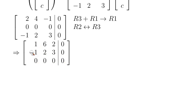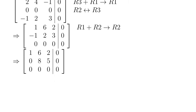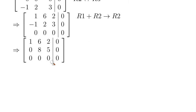I want to turn the negative 1 into 0, so I'm going to take row 1 and add it to row 2 — that replaces row 2 — which gives us this following matrix. So now we have 1, 0, 0 in the first column.